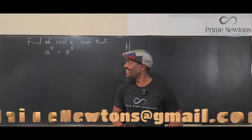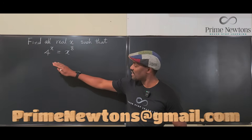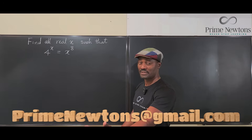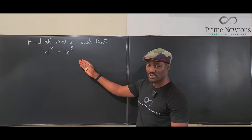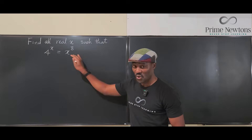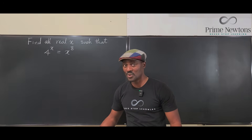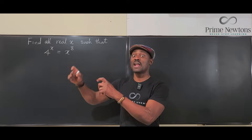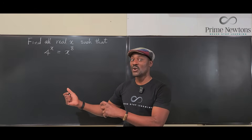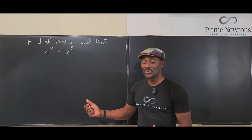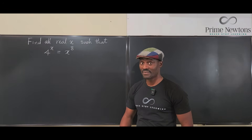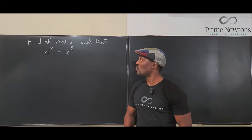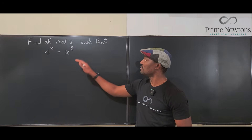Welcome to another video. I have an equation here that has an exponential expression on the left-hand side and on the right-hand side is a polynomial equation. I think this is called a transcendental equation because you cannot just use exponential strategies to find your answer or use polynomial strategies. I am going to try to find all real values of X.